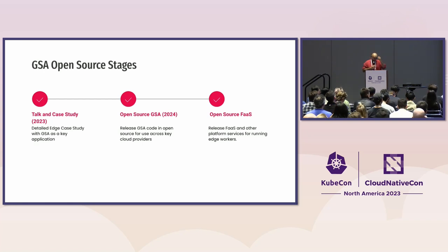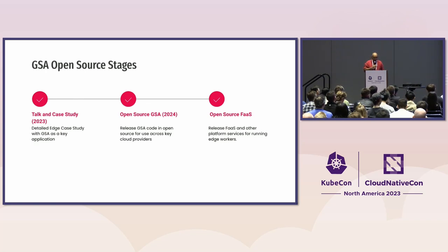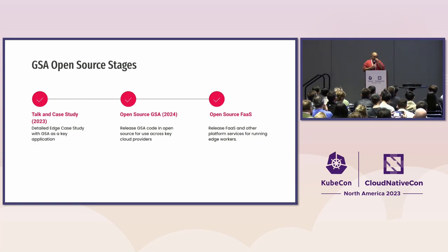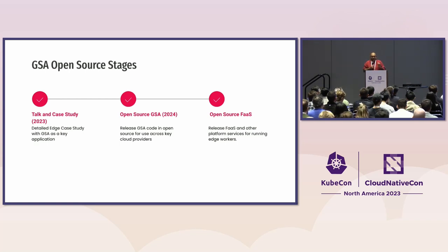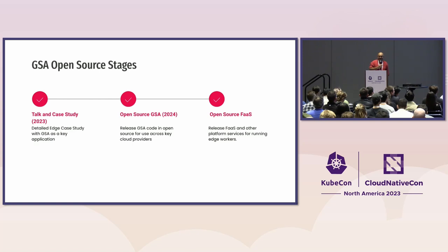Coming to the last stage — what is our plan? You are in this talk as our first attempt at using multiple cloud providers to solve a problem for us. We want to contribute a case study so people understand in greater depth what this was all about. In 2024 we plan to open source our GSA — the high-performance proxies — which will work across multiple cloud providers. The final stage is to open source FaaS, which allows you to program all these policies as simply as writing scripts. Thank you.